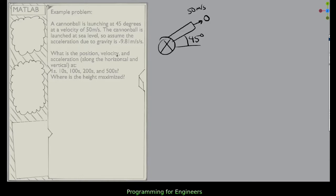And we have our velocity of 50 meters per second. So what is the position, velocity, and acceleration along the horizontal and vertical at 1, 10, 100, 200, and 500 seconds, and where is the height maximized?